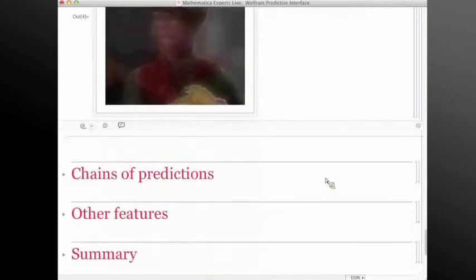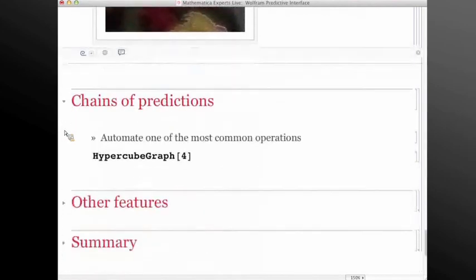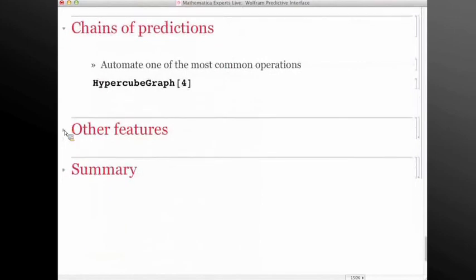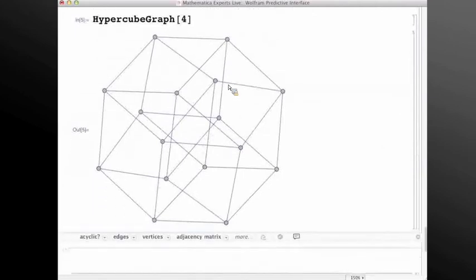Okay, so again, automation is the key here. There's another very common way that people work that we can automate. So let's say that we have some graph theoretic expression.